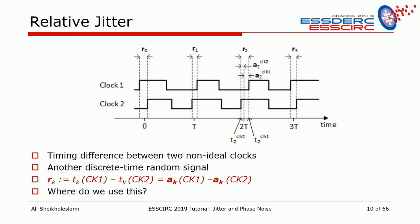Relative jitter is the timing difference between two non-ideal clocks. It's denoted R_k — a bold R to emphasize it's a random signal. R_k = T_k(clock 1) − T_k(clock 2), which can be shown to equal the absolute jitter of clock 1 minus the absolute jitter of clock 2. So relative jitter is the difference between two absolute jitters — you measure both with respect to an ideal clock and find the difference.